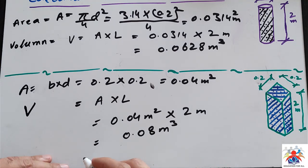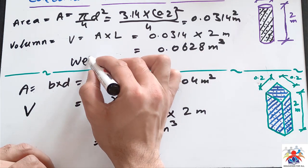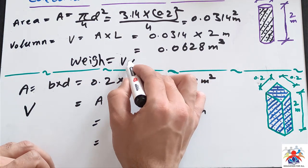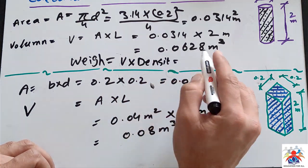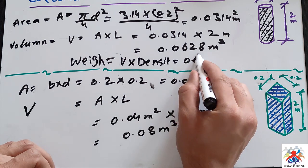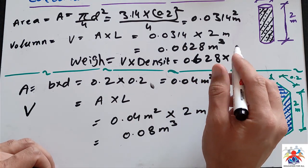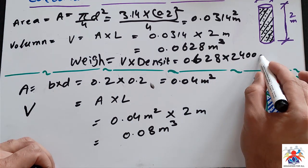Weight equals volume multiplied by density. The volume is 0.0628 multiplied by density. In our case, we have 2400 kg/m³, and the weight for this column is...